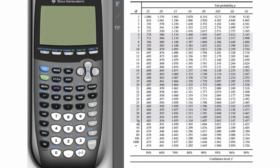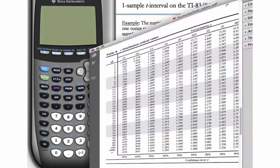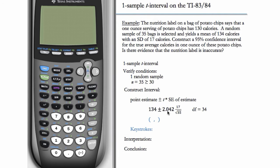34 is not on this table, so when it's not on the table, we'll just round down. So we'll look at row 30 here and at 95% confidence, we have a 2.042. So that's where that number comes from, 2.042.